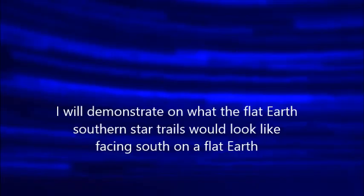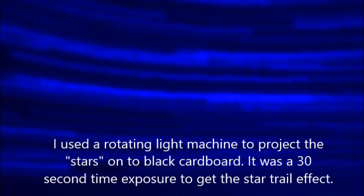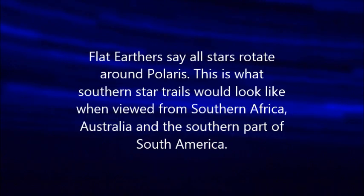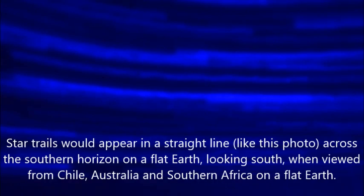I will demonstrate what the flat Earth southern star trails would look like when facing south on a flat Earth. I used a rotating light machine to project the stars on a black cardboard. It was a 30-second time exposure to get the star trail effect I needed. Flat Earth would say all stars rotate around Polaris. This is what the southern stars would look like when viewed from South Africa, Australia, and the southern part of South America. Star trails would appear in a straight line like this photo across the southern horizon on a flat Earth when looking south from Chile, Australia, and southern Africa.